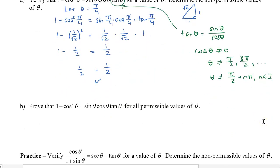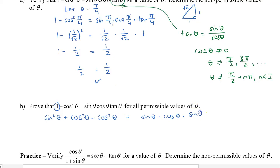Now let's prove that same identity. I know that the one can be replaced by sin squared theta plus cos squared theta, because that's the identity because it equals one. I still have the minus cos squared theta, so I'm going to write that on the left. And that's going to equal sin theta times cos theta, but let's change our tan theta using our quotient identity to be sin theta divided by cos theta. On the left, these conveniently cancel off to give us sin squared theta. On the right side, the cos thetas cancel off, and we have sin theta times sin theta, which is also sin squared theta.